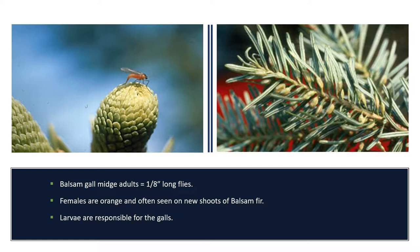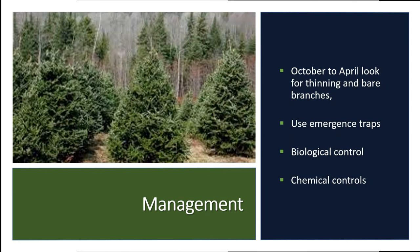The larvae, which is the stage responsible for creating the galls, are yellow, orange, or pink, and will remain in the galls until they fall to the ground in the autumn. They overwinter in the leaf litter and pupate in the spring to start the cycle again.